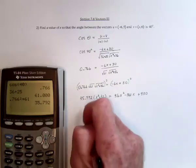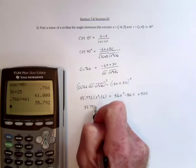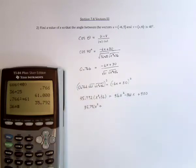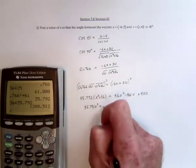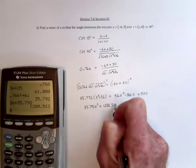Then over here I need to distribute 35.792x squared plus 36 times 35.792. So 1288.512.